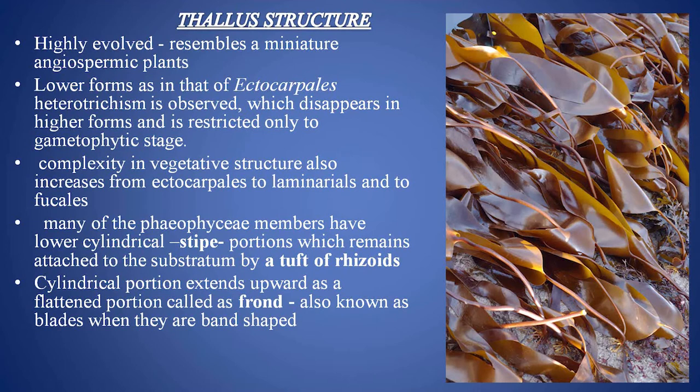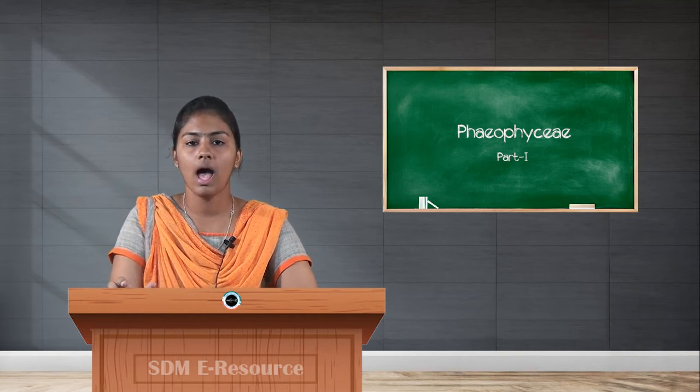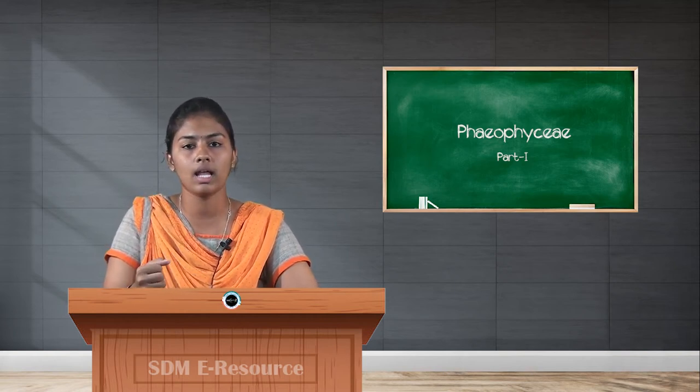Whether vegetative, anatomical, or physiological, the Ectocarpales are least evolved and the Fucales are most evolved. As the order increases from Ectocarpales to Fucales, the complexity in vegetative, anatomical, and physiological structures increases. Many Phaeophyceae members have a lower cylindrical portion called a stipe.